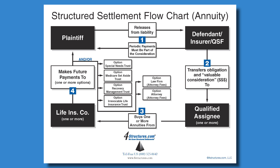Then the assignment company, in receiving money from the insurance company or the defendant, also takes on the obligation, and they purchase an annuity or other funding instrument to fund that obligation. Then the final step is to have the payments paid directly to the payee, whether that's the plaintiff themselves, or it could be the plaintiff's trust, if it's a special needs trust, or it could be to the attorney or law firm for structured attorney fees.